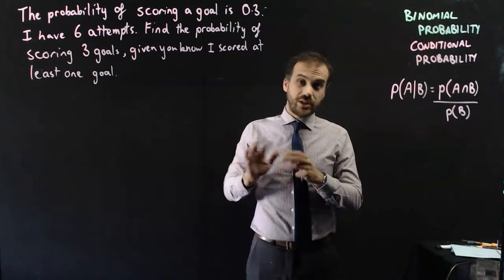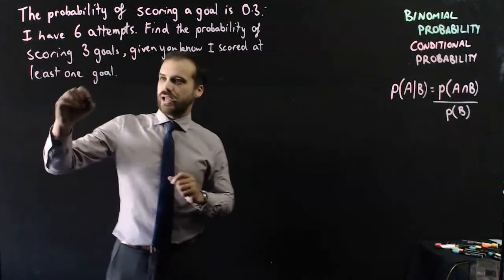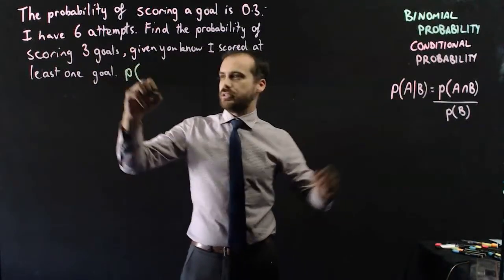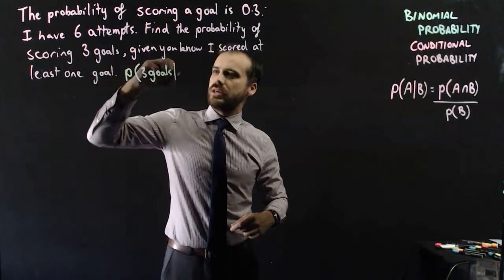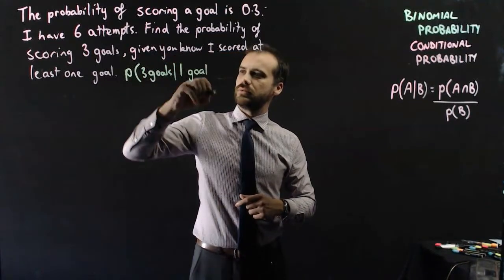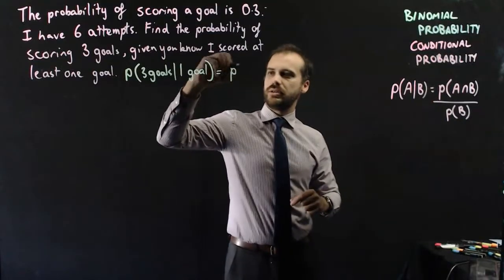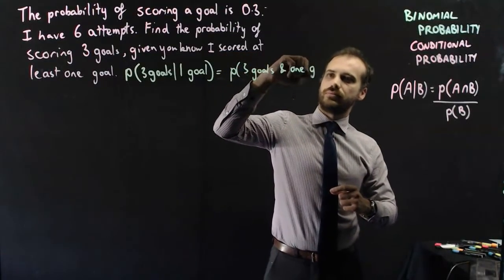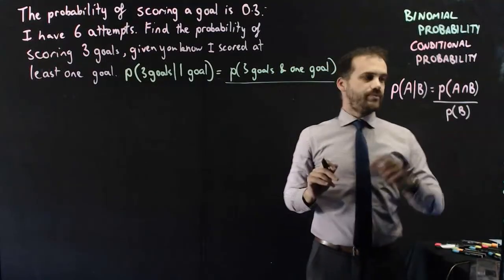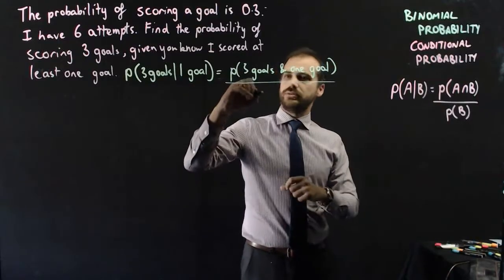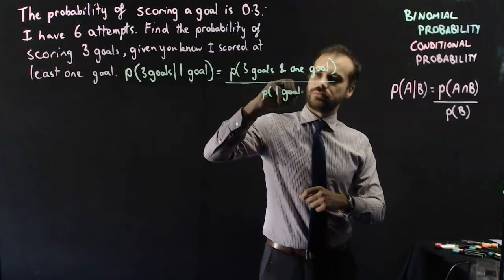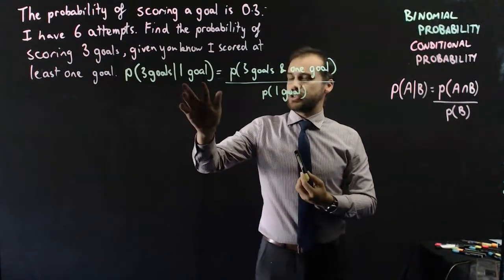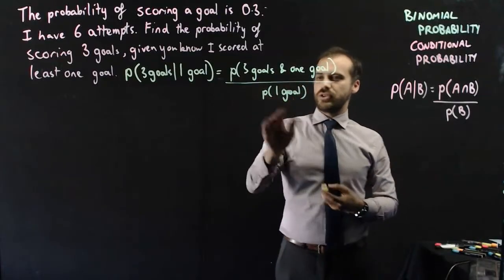So I'm going to write this up with some notation, and that's going to look pretty complicated. Actually, let's write it up in natural language first. The probability of A, so A is scoring three goals, three goals, given you know that I scored one goal is equal to the probability of scoring A and B, so three goals and one goal over probability of B, B being one goal. Okay, so that's what it looks like in natural language, and that's pretty easy to understand. The probability of three goals given I scored one goal is equal to the probability of three goals and one goal over the probability of one goal.